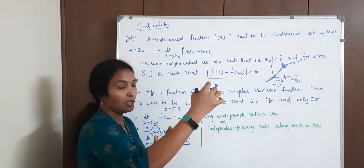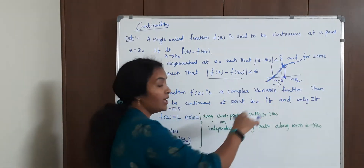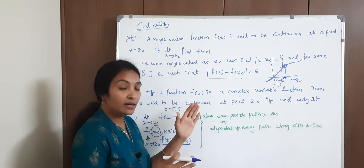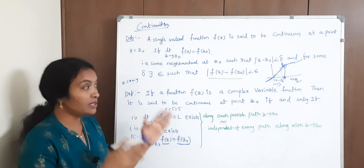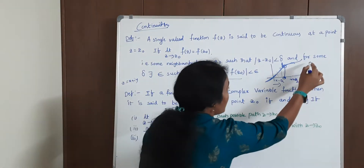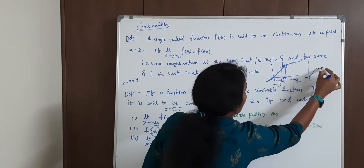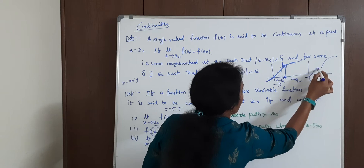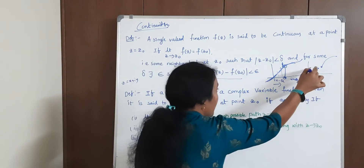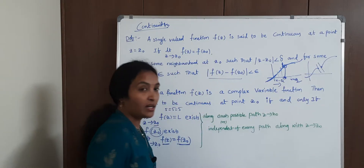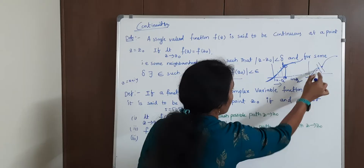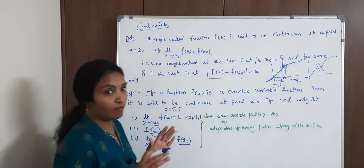For a continuous function, there are no gaps at all. But suppose you have a breaking point — then the left-hand side limit exists on one side and the right-hand side limit exists on the other side, but there is a breaking point. Then this is not continuous — the graph breaks and it is not continuous.